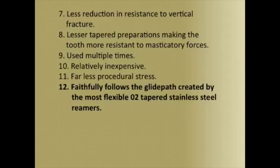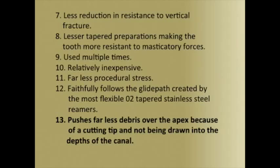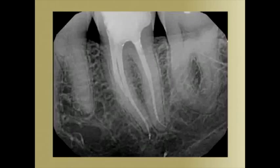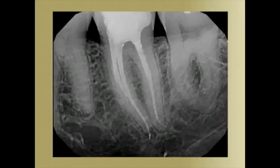We already covered this but it is worth repeating: the reciprocating relieved reamers push far less debris over the apex because of a cutting tip and not being drawn into the depths of the canal. With a motion that does not allow for being drawn in, the dentist has superior measurement control. Here is a case I finished a few weeks ago. It represents much of what I am trying to convey, including the ability to shape canals without removing excess amounts of dentin, preserving canal anatomy and excellent measurement control without the concerns of instrument separation and increased possibility of dentinal defects and excessive removal of coronal dentin.